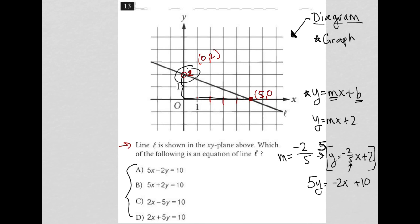And then I want my x and y on the same side of the equal sign, so I'm going to add 2x to both sides. And that gives me 2x plus 5y equals 10. And therefore, the correct answer here is choice D.